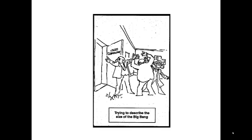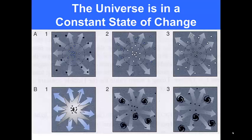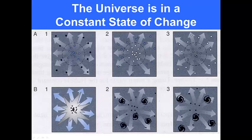Here we have a picture of scientists trying to describe the size of the Big Bang. The universe is in a constant state of change and this illustrates the two theories. The first one is the steady state theory where the amount of matter remains the same. So you have the same amount of matter on the inside of the circle as you have on the outside. So it's always a steady state of matter.